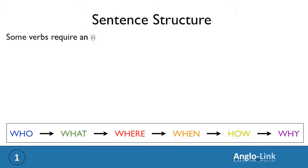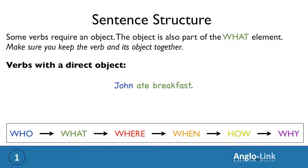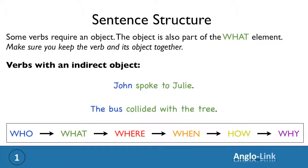Now some verbs require an object. The object is also part of the what element, so make sure you keep the verb and its object together. Some verbs take a direct object. For example, John ate breakfast. The bus hit the tree. And some verbs take an indirect object. That's an object that comes after a preposition. For example, John spoke to Julie, or the bus collided with the tree.